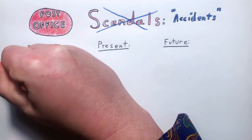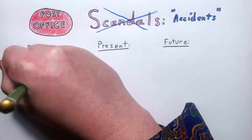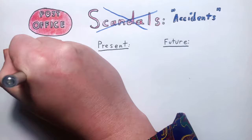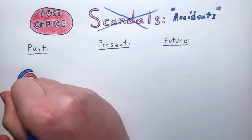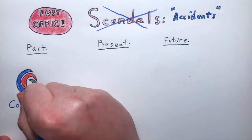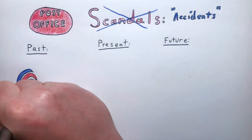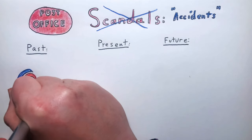probably the largest story in the last week was the developments in the post office computer scandal after the government announced new laws to quickly exonerate and compensate victims. More than 900 postmasters were wrongly prosecuted between 1999 and 2015 after being falsely accused of stealing huge sums of money with only 93 convictions ever being overturned.